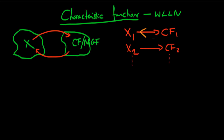This is a very nice property for characteristic functions to have, because if we can show that variables X1 and X2 have the same characteristic function, then they must represent the same underlying random variable — there's only one characteristic function per random variable and vice versa. This allows us to prove some theorems which we wouldn't be able to prove without their use.